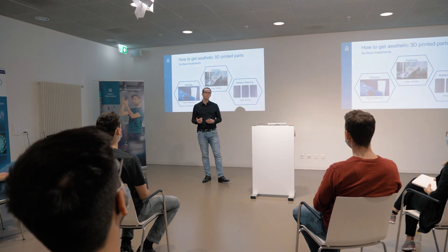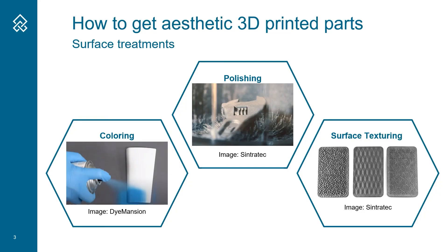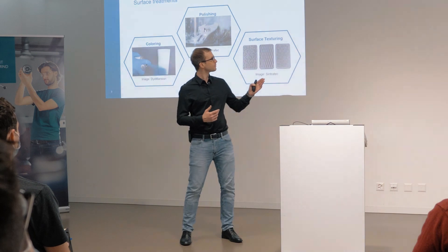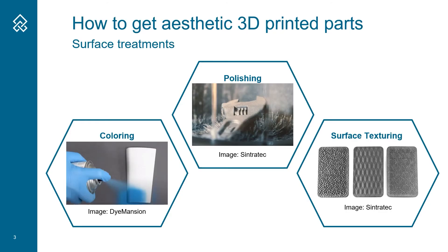Another post-processing method is polishing. With the Sintratec polishing station, small needles peel the surface of the part and give it a slightly darker and brighter surface appearance. The third option is surface texturing, and that's the topic I would like to tell you more about in this keynote.